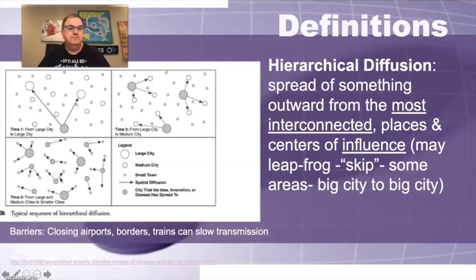Barriers that relate to this can be closing of airports, borders, trains, closing trains. These can slow the transmission across international borders or across space. So those type of measures are designed to target spreading through hierarchical diffusion. But the reality is, both are at play here. And we just need to be able to see them.